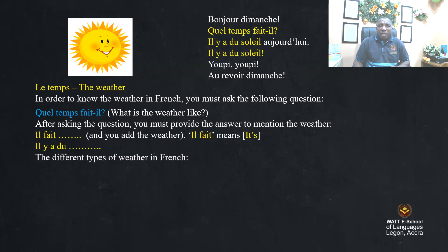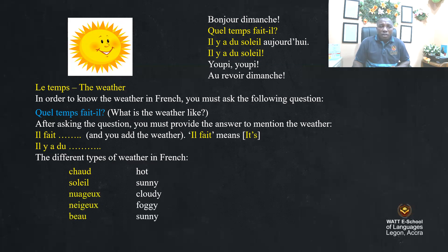The different types of weather in French: chaud — that is hot; soleil — that is sunny; nuageux — cloudy; neigeux — foggy; beau — sunny; pleut — raining. When you see these: chaud, soleil, nuageux, neigeux, beau, pleut — they are all used to express the weather in French.